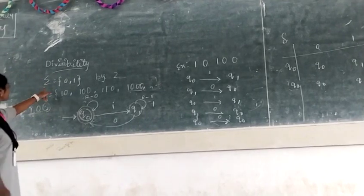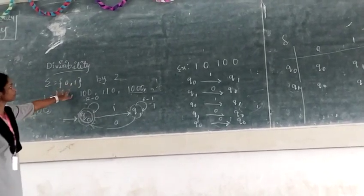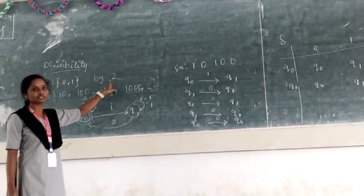In question itself, alphabet equals to zero comma one, these are the input symbols. And our condition is divisibility by two.